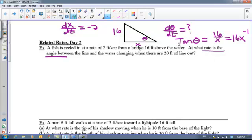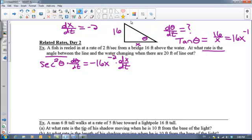So what we're going to do next is take our derivative with respect to time of both sides. The derivative of tangent is secant squared of theta times d theta dt, because of the chain rule, is equal to negative 16x to the negative 2 times dx dt. Now at this point, I get to freeze my picture.